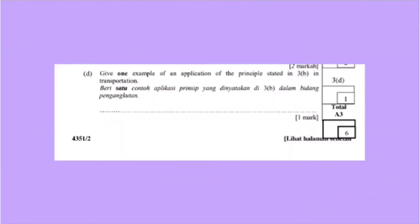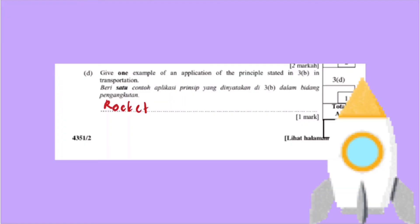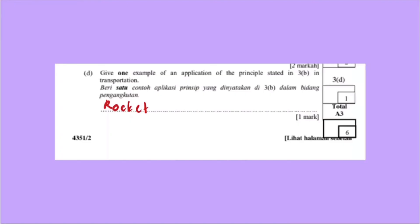The next question asks for one example of an application of the principle of conservation of momentum in transportation. An example is rockets, which is an example of explosion. Initially, before the rocket is launched, it is stationary and at rest. After launch, the rocket moves upwards and hot gases move downwards. This is a perfect example of explosion because the system starts at rest and the two objects move in opposite directions.